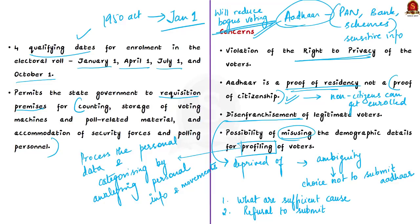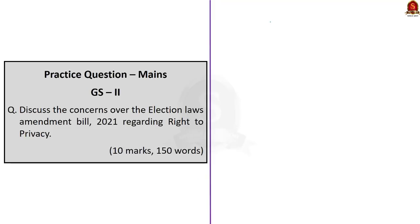The bill now awaits the assent of the President. Once the President gives assent, it will become an act and come into force, meaning those enrolling in the electoral roll will be asked to furnish their Aadhaar details. In this discussion we saw the Election Laws Amendment Bill of 2021, its important provisions, the amendments it tries to bring, and the apprehensions regarding these amendments.